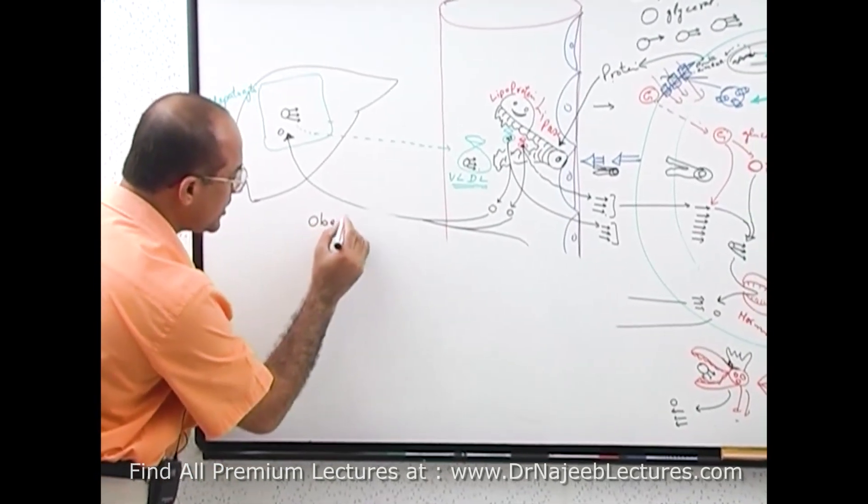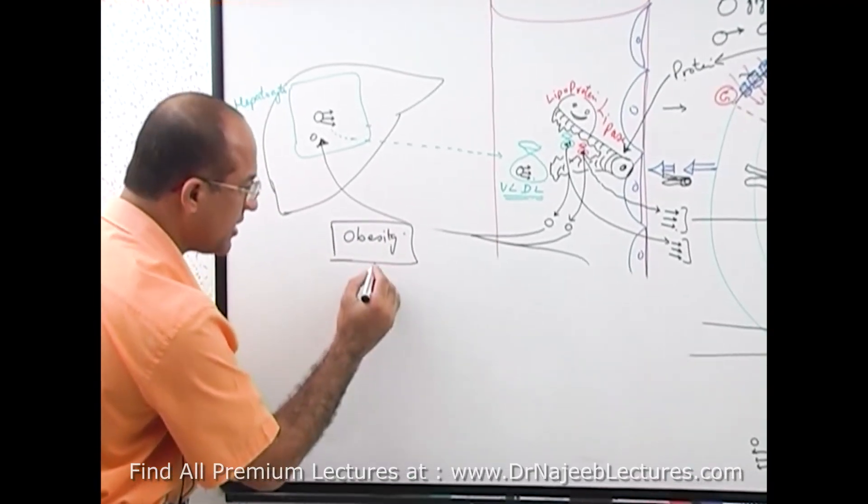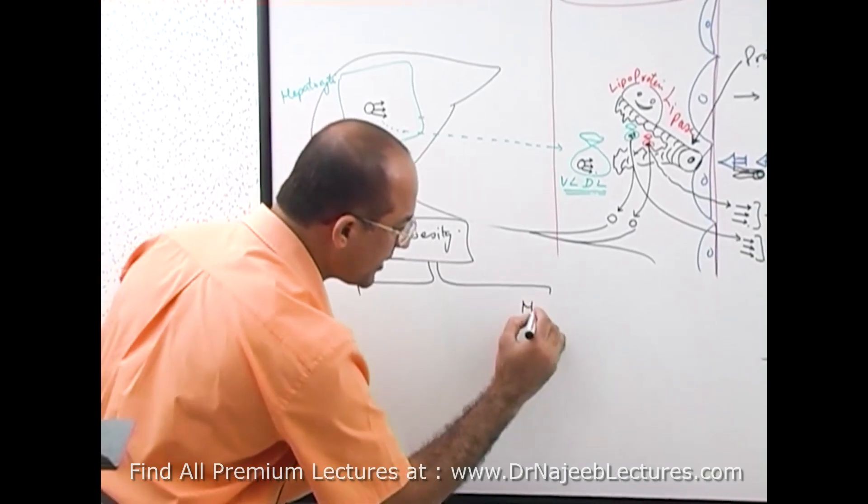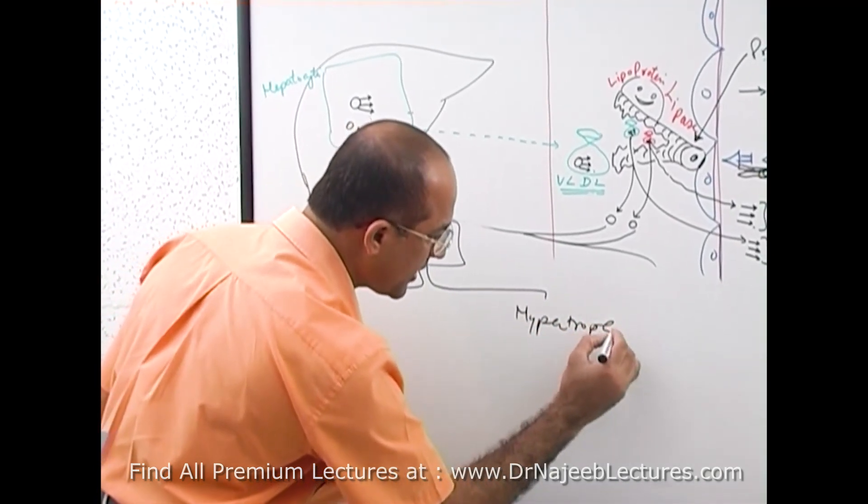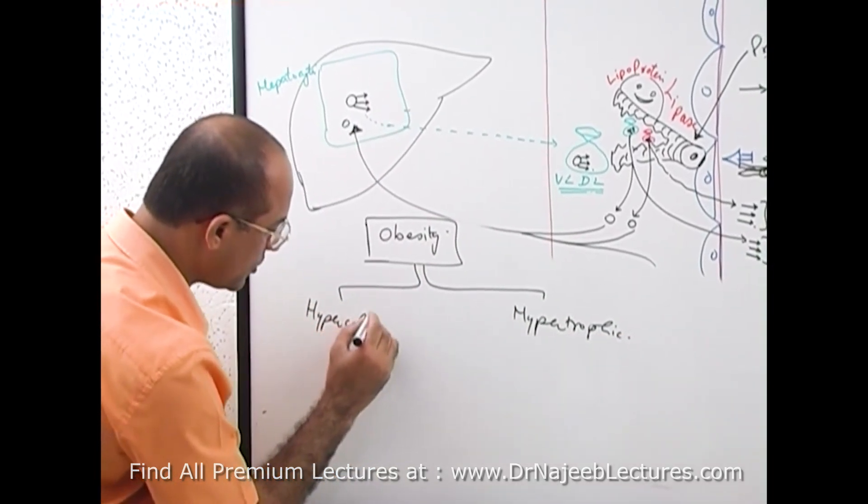Right now, obesity, of course when you have a lot of extra fat in your body, there are two types of obesity. Number one is hypertrophic, the other is called hypercellular.